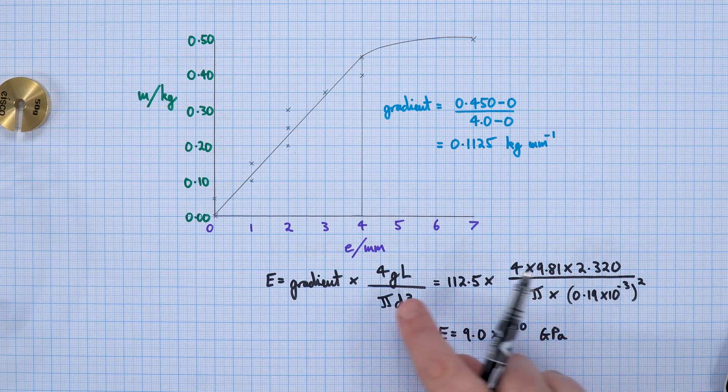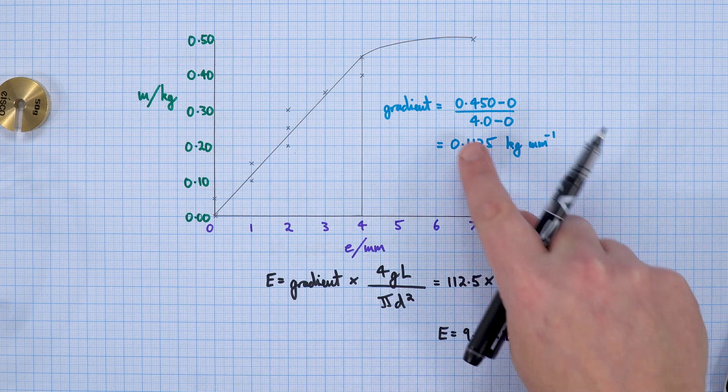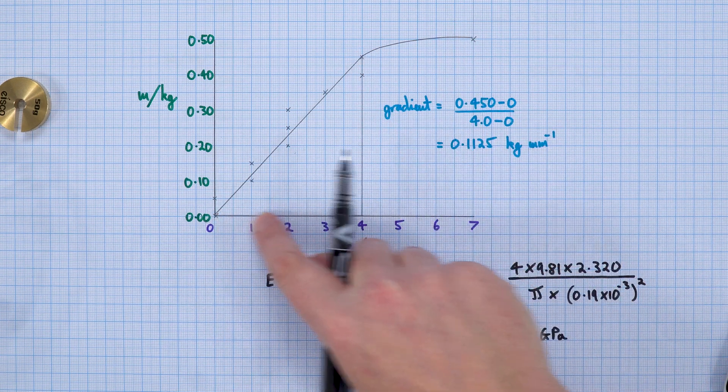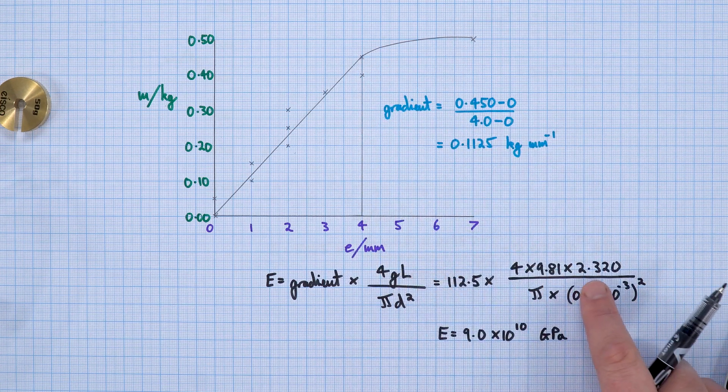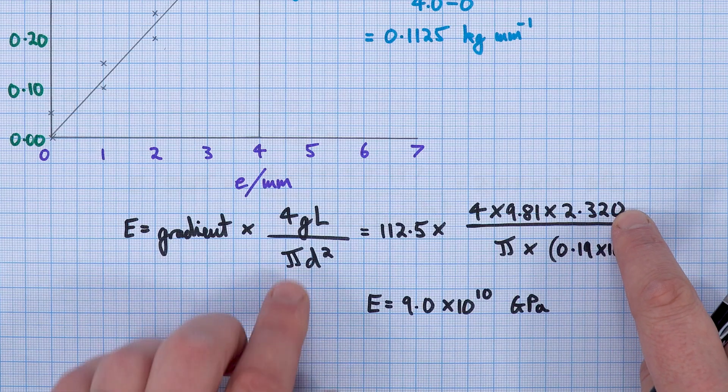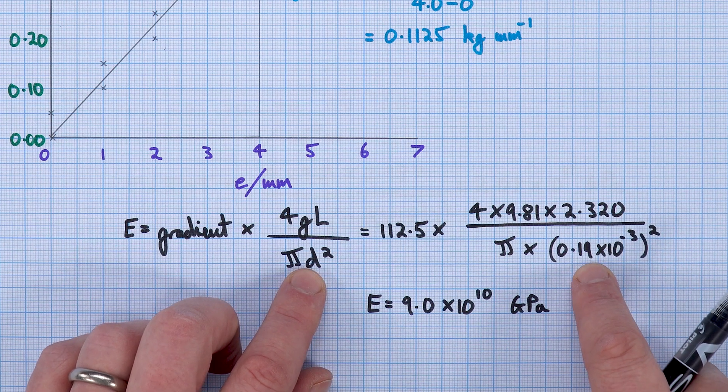The gradient was worked out from the graph, and it's always useful to draw your line on there. We've got the original length, which was 2.320 meters, and the diameter was 0.19 of a millimeter.